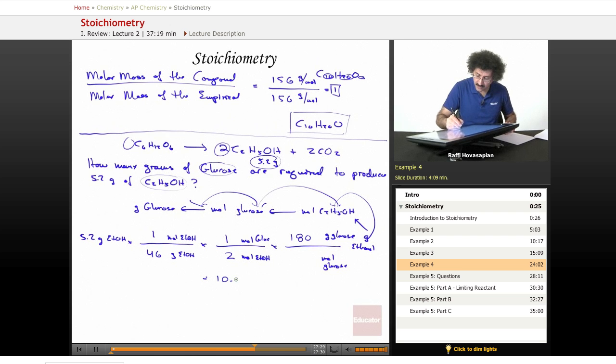Therefore, my final answer is 10.17 grams of glucose. 10.17 grams of glucose will produce 5.2 grams of ethanol.